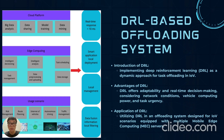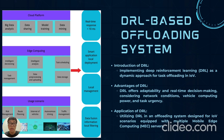DRL extends to an offloading system tailored for IOV scenarios featuring multiple mobile edge computing, also known as MEC servers. This system leverages DRL to enable efficient task allocation and processing in dynamic IOV environments. With the help of cloud platforms and edge computing, the offloading system can achieve quick real-time response, smart application local deployment, vehicle local management, and local filtering of data fusion information — all contributing to seamless IOV connectivity.